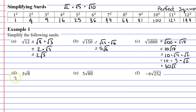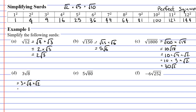Moving on to question D — we've got 3 times the square root of 8. Focusing on the number under the radical, 4 times 2 makes 8, and 4 is a perfect square. We rewrite as 3 times the square root of 4 times the square root of 2. The square root of 4 is 2, so this becomes 3 times 2 times root 2. And 3 times 2 is 6, giving us 6 root 2.